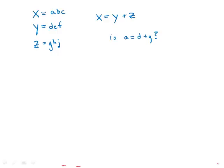If x, y, and z are three-digit positive integers, and if x equals y plus z, is the hundreds digit of x equal to the sum of the hundreds digits of y and z?